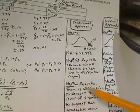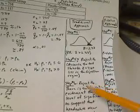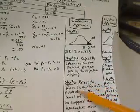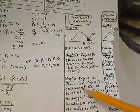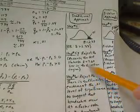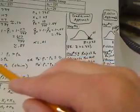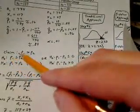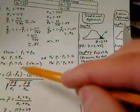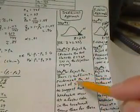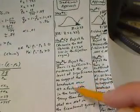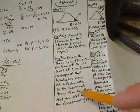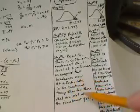In step 6, we restate the conclusion: we reject the null hypothesis. Since we are rejecting the null and supporting the claim, there is sufficient evidence at the 0.01 level of significance to suggest that headaches occur at a faster rate in the treatment group than for those not in the treatment group.